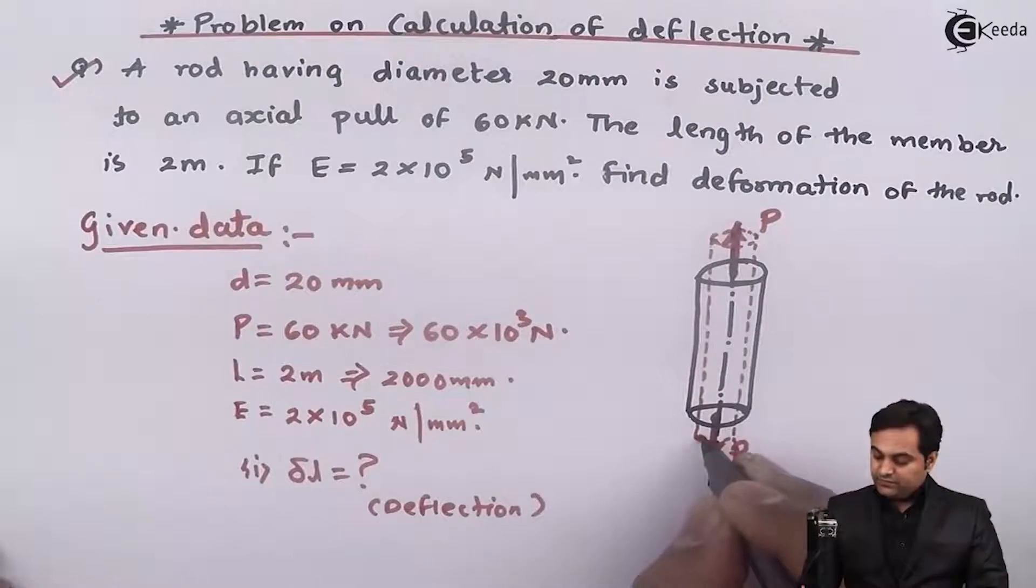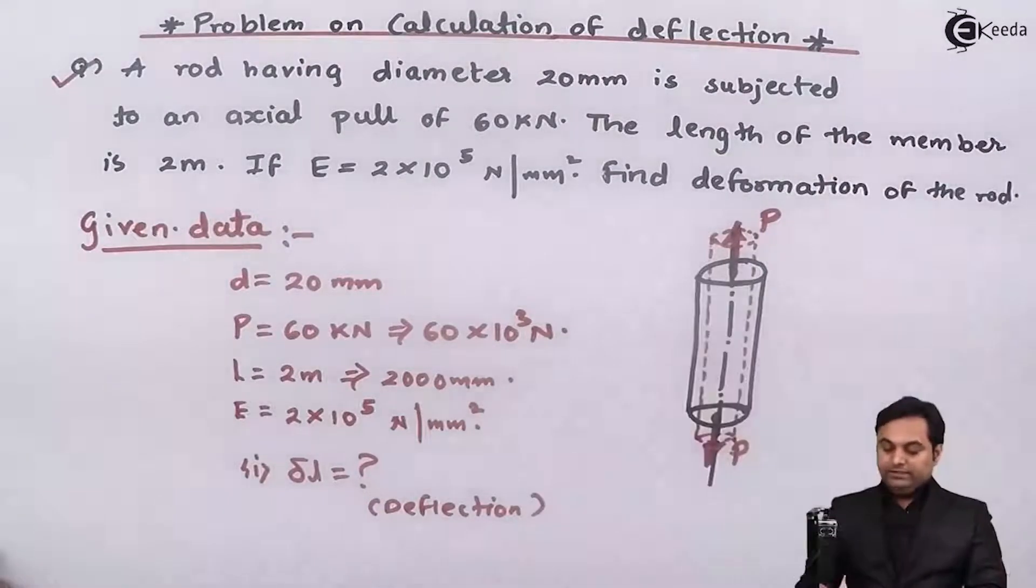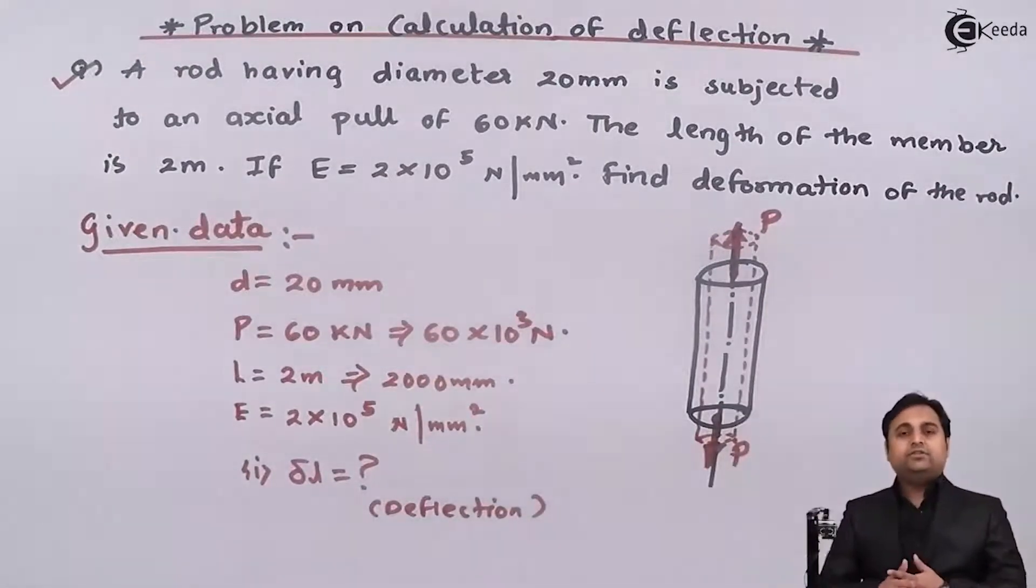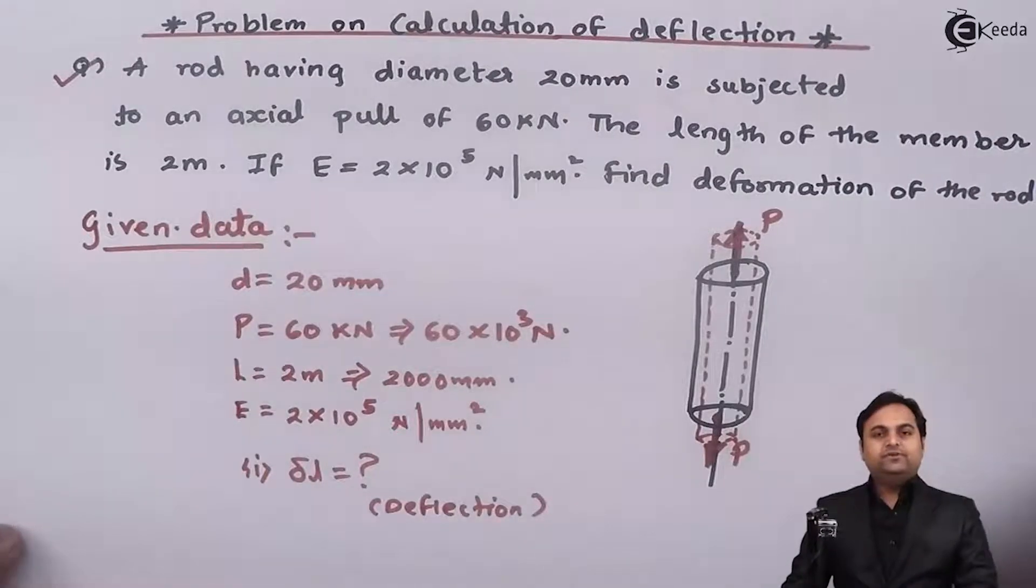It will look like this when it is elongated, that is length increases and the diameter will go on decreasing. So this deflection, that is the change in length of the rod, is what we have to calculate. So let us try to get the solution for this problem.